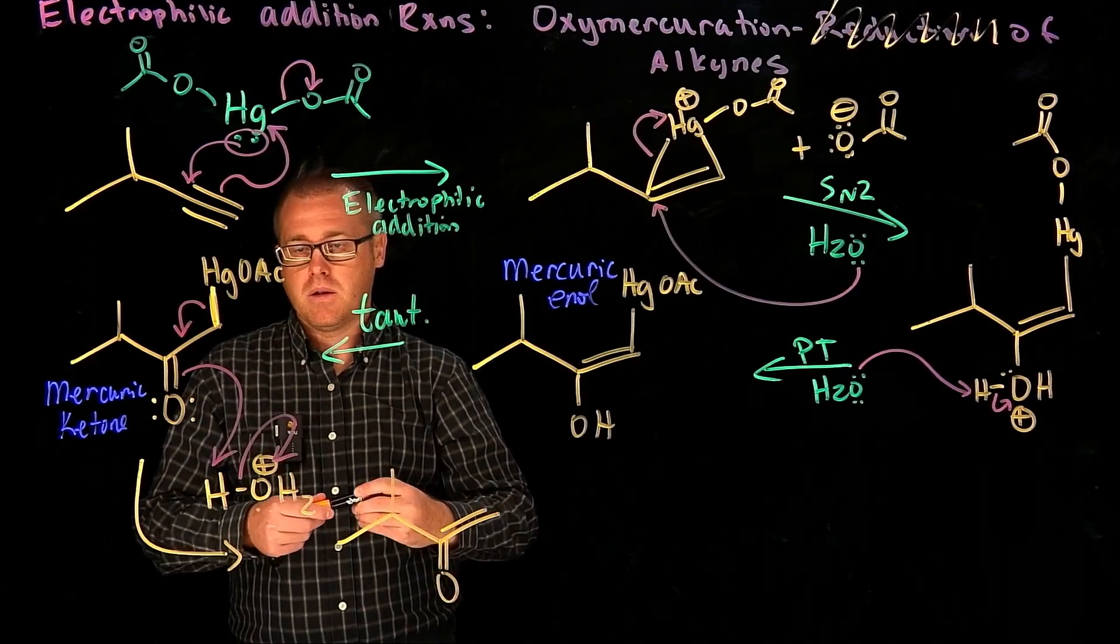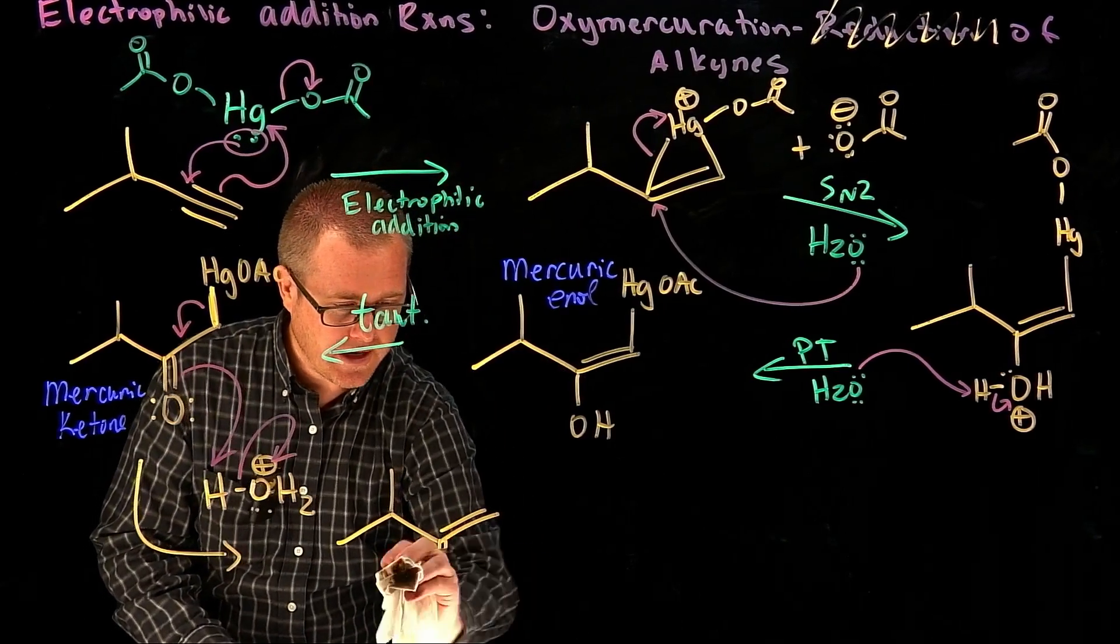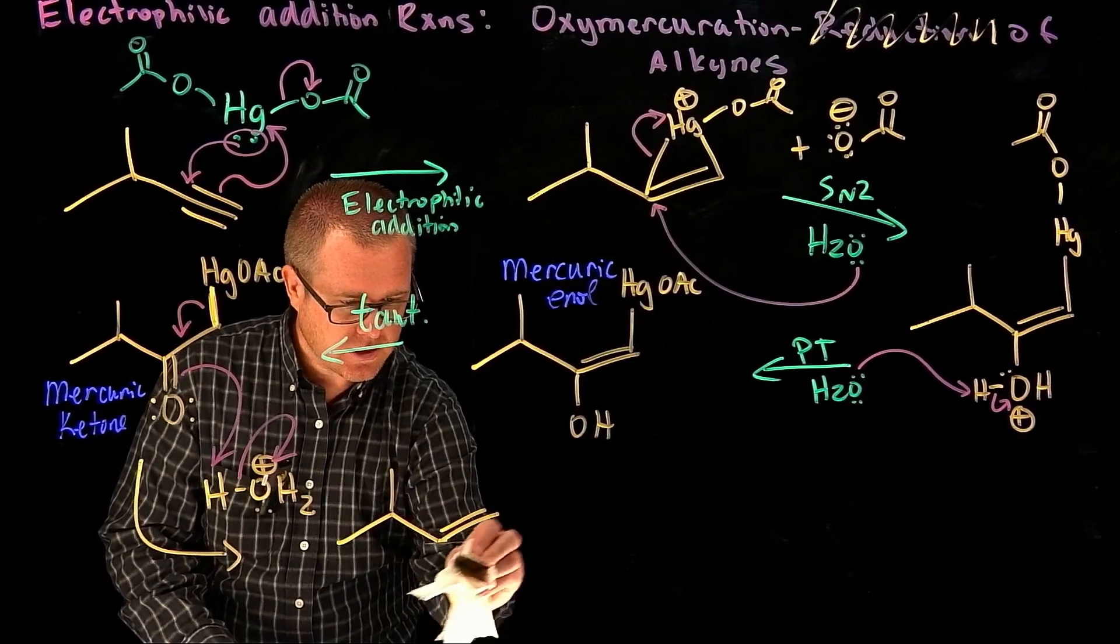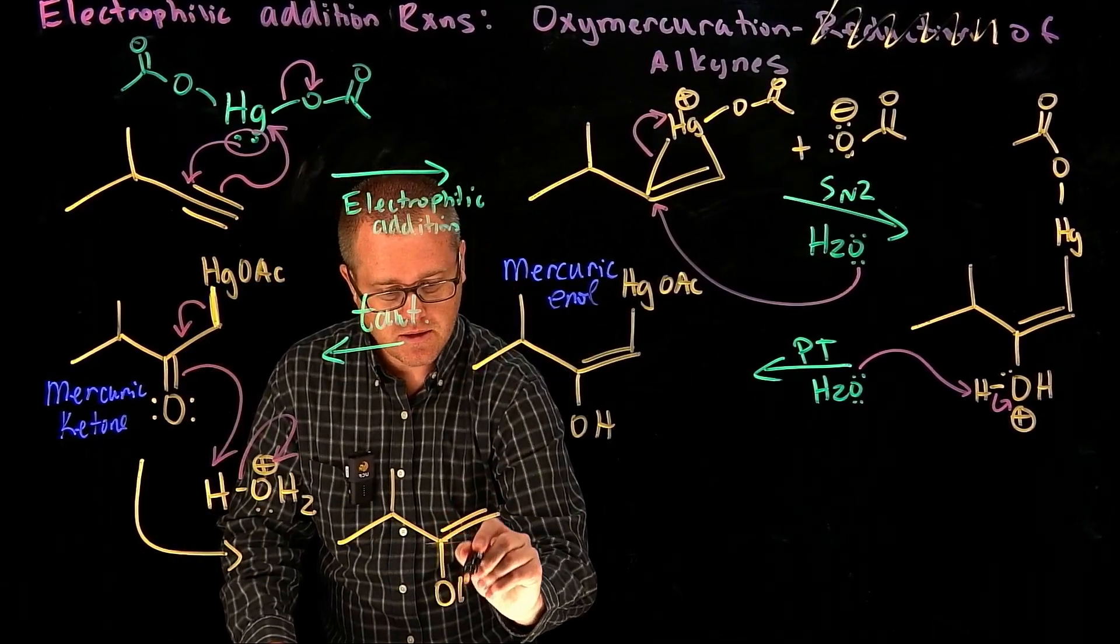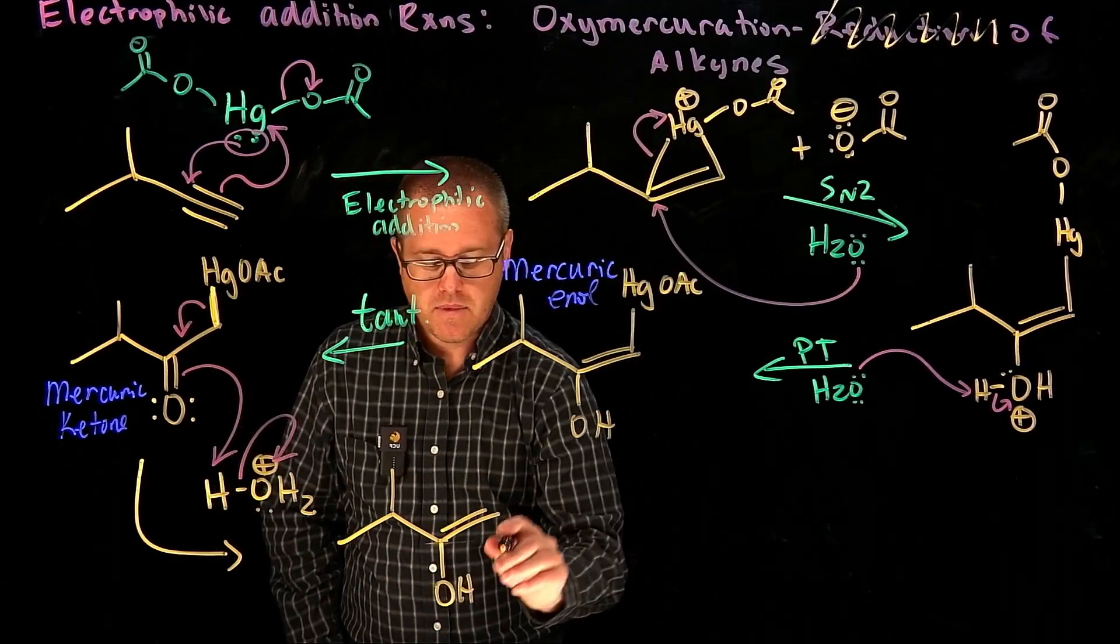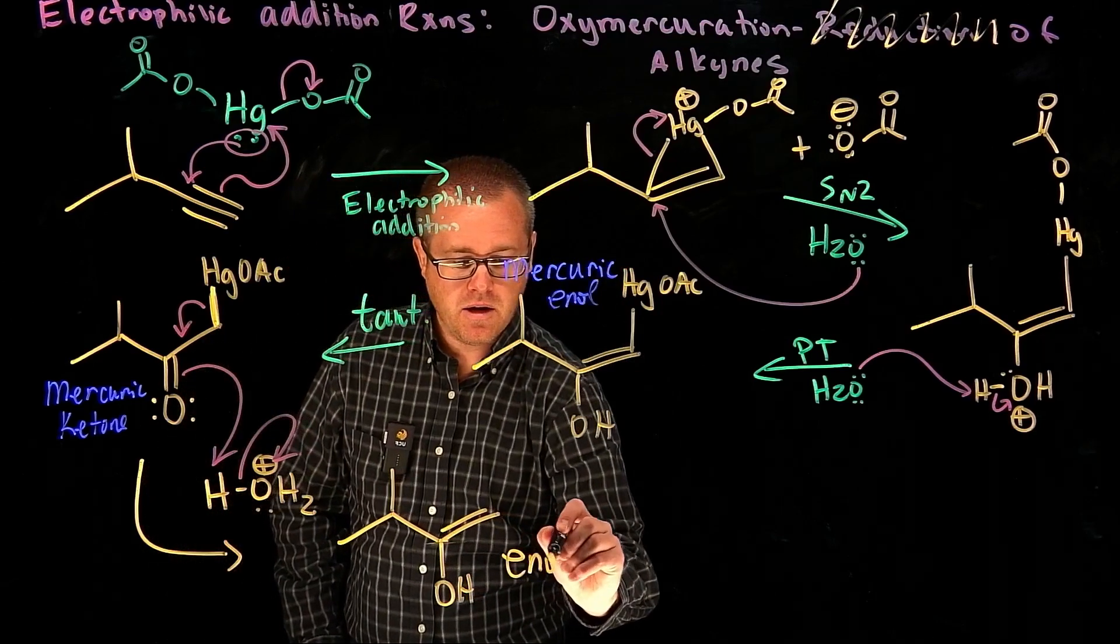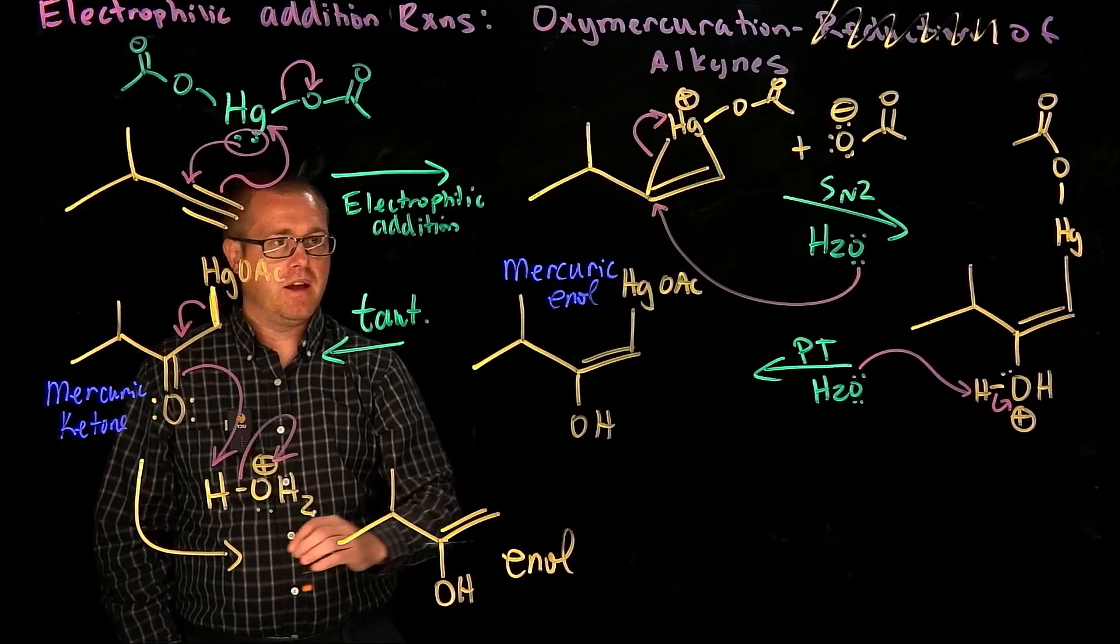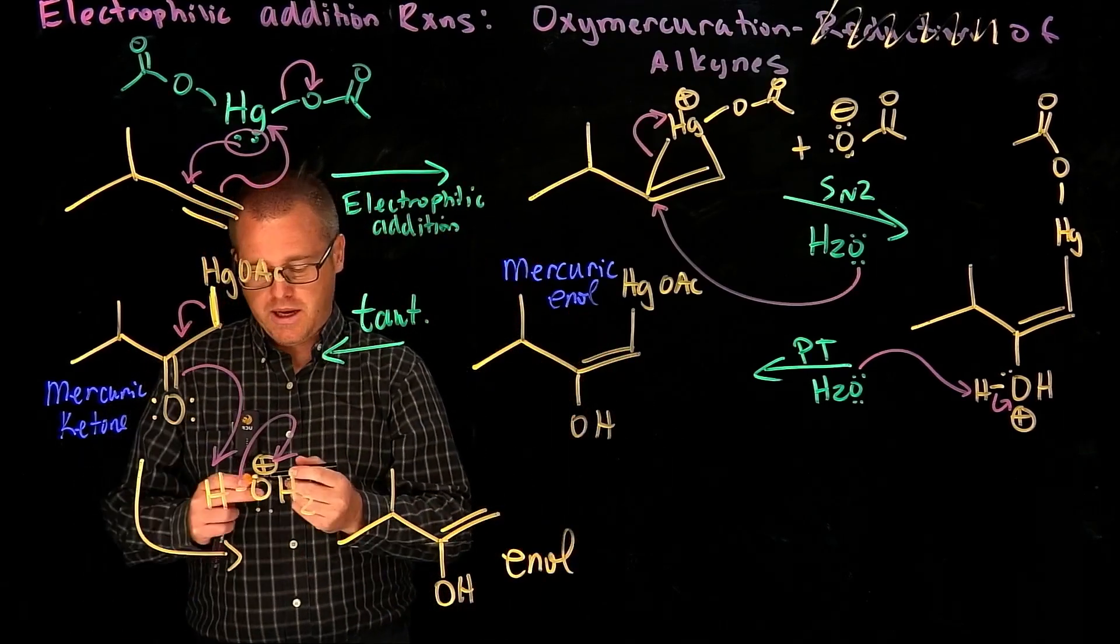And then that's going to generate... whoa, whoa, whoa. That's not what it's going to generate. That's a Texas carbon. Don't do Texas carbons. What it's going to generate is the enols that we have seen at this point. There's the mercuric enol and there's our normal enol.